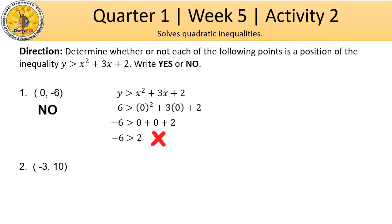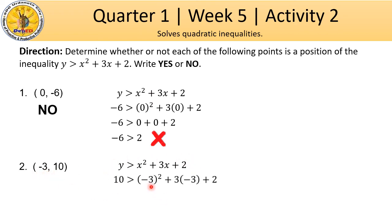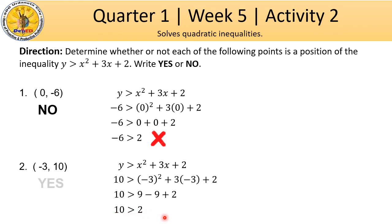Number 2: ordered pair negative 3 and 10. Substitute x equals negative 3 and y equals 10 into our inequality. Negative 3 squared is 9. 3 times negative 3 is negative 9. Plus 2. So 10 should be greater than 9 minus 9 plus 2, which equals 2. Is 10 greater than 2? Yes! The answer is yes.